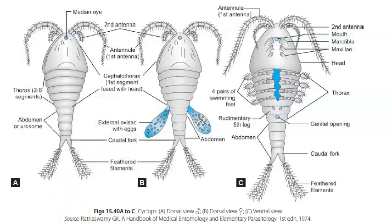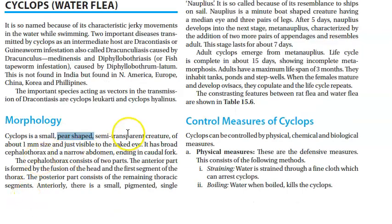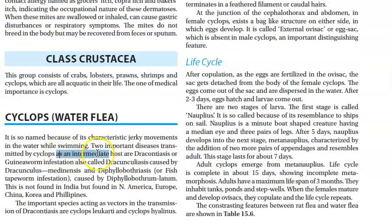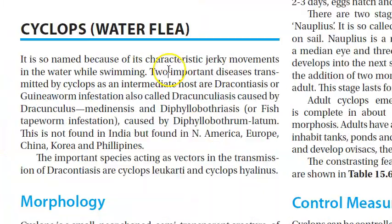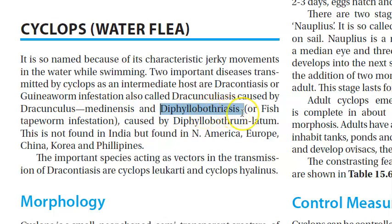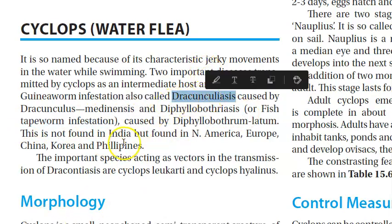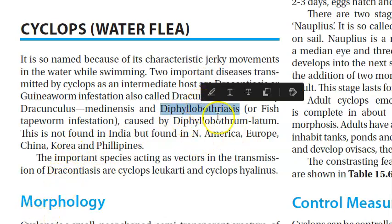Cyclops has one median eye, feathered filaments, cordial fork, abdomen or urosome, thorax, and segments. It's a small, pear-shaped, semi-transparent creature. Two important diseases transmitted by cyclops as intermediate host are guinea worm infestation (dracunculiasis) and diphyllobothriasis, which is fish tapeworm infestation. Dracunculiasis is eliminated from India, but fish tapeworm is still a concern.